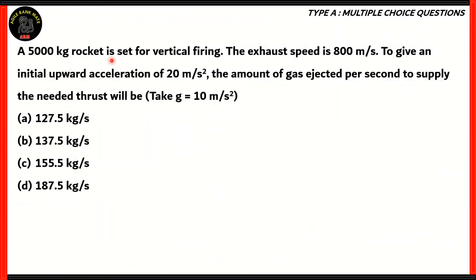A 5000 kg rocket is set for vertical firing. The exhaust speed is 800 m/s. To give an initial upward acceleration of 20 m/s², the amount of gas ejected per second to supply the needed thrust will be, take g = 10 m/s².